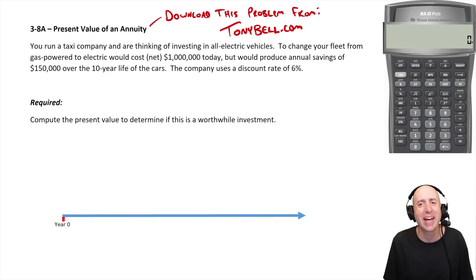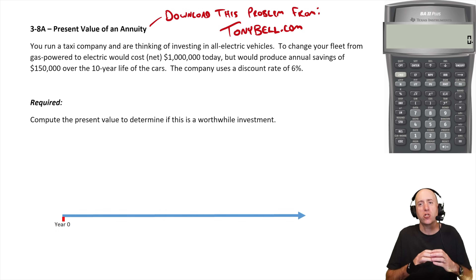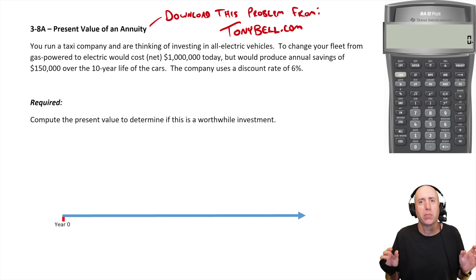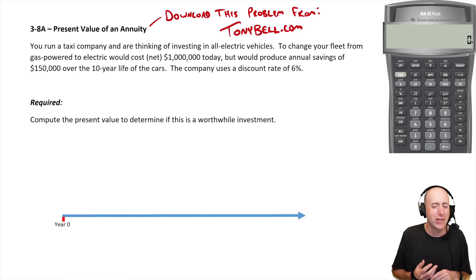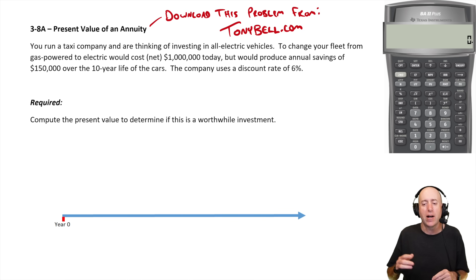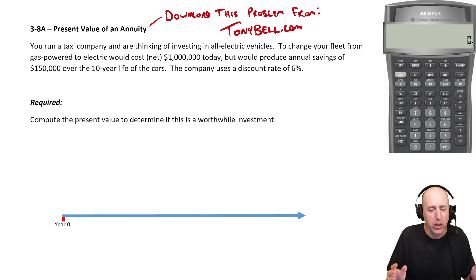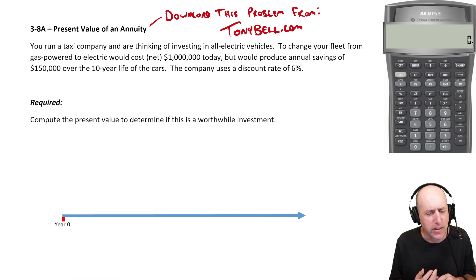Let's take a look at problem 38a. We're taking the present value of an annuity. An annuity is just a stretch of recurring cash flows, and this is such a common problem in corporate finance. If you're doing finance, you will see this type of problem in your class where you've got a string of payments. Let's look at the situation and contemplate how we're going to tackle it.